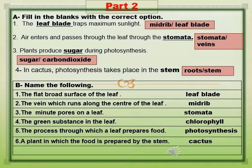Exercise B. Name the following. The flat broad surface of the leaf is leaf blade. Number 2: The vein which runs along the center of the leaf is called midrib. Number 3: The minute pores on a leaf are called stomata.